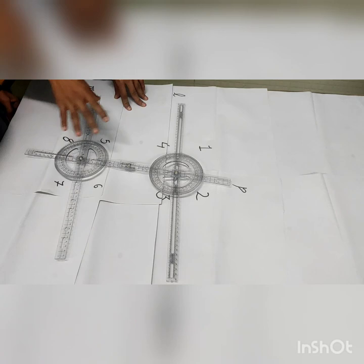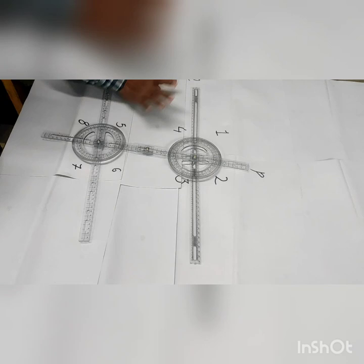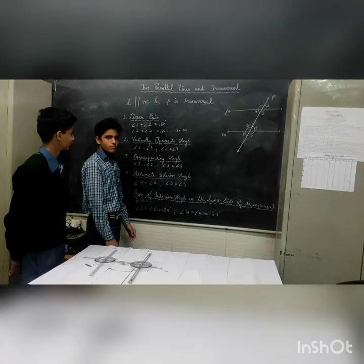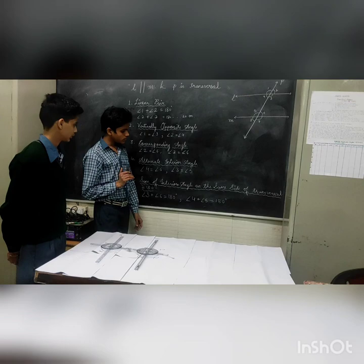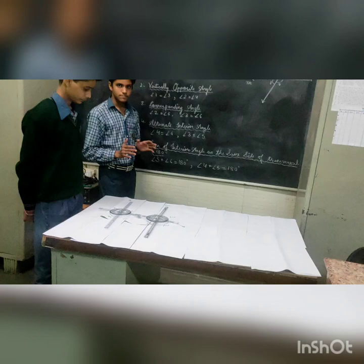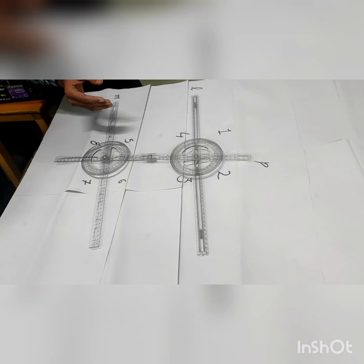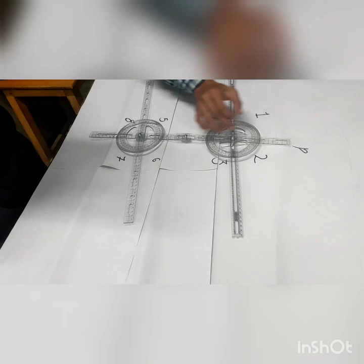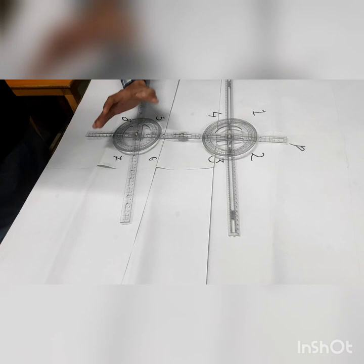Here is the figure. This forms a Z shape. L intersects here and intersects here, making a Z shape. The sum of the interior angles on the same side of the transversal line is 180 degrees. We can see from the model that the sum of co-interior angles on the same side of the transversal line is 180 degrees.